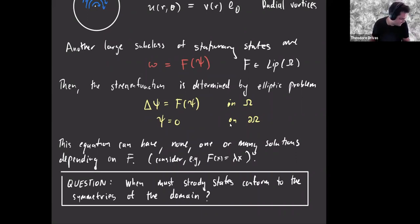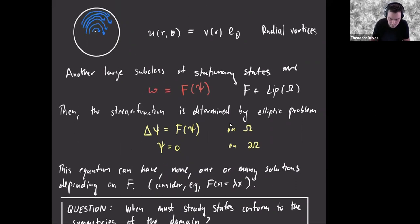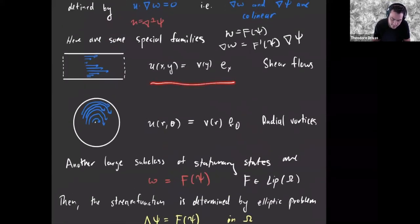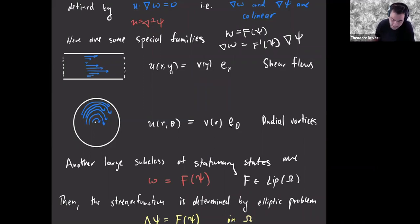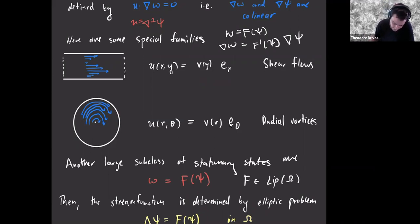The first question to ask, sort of in passing, is: when do stationary states inherit the symmetries of the domain? In these two leading examples — shear flows on the periodic channel and radial vortices on the disk — both have the same Euclidean symmetry as the domain. In the first case, ∂_x is a Killing vector field tangent to the boundary; here ∂_θ is the same. So is this a general property? For a large class of stationary states, is it true that they must obey the same symmetries?